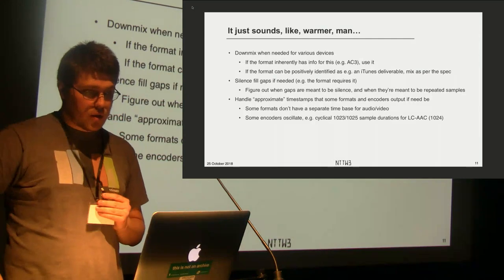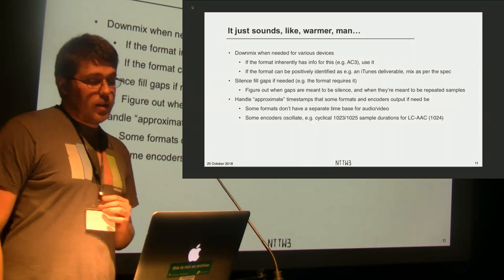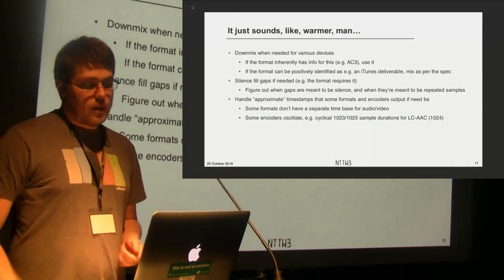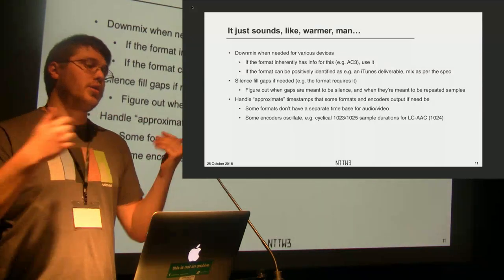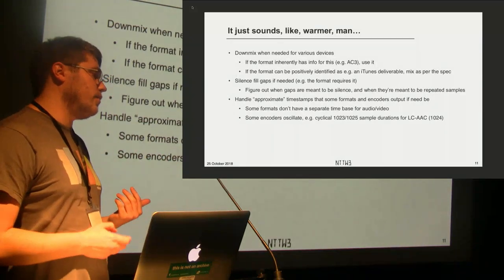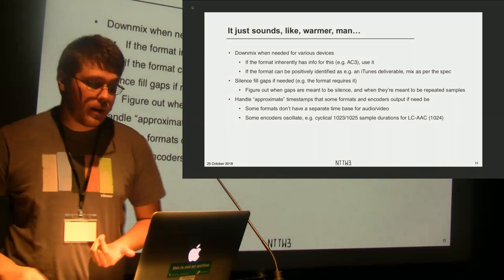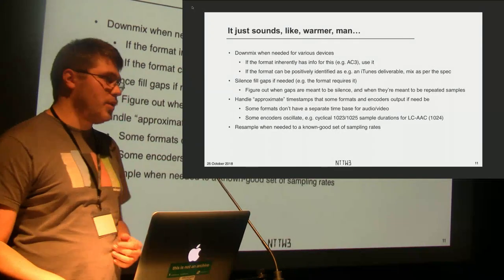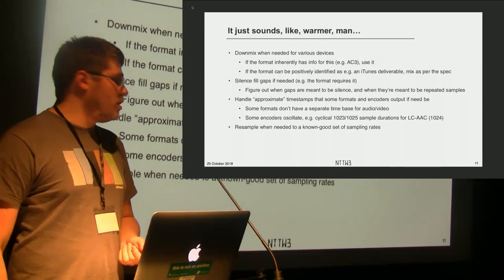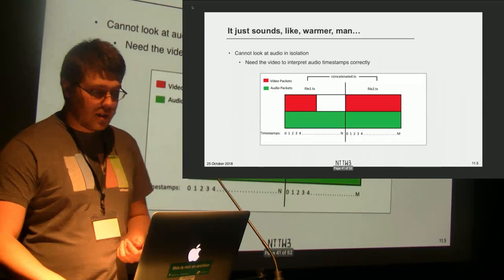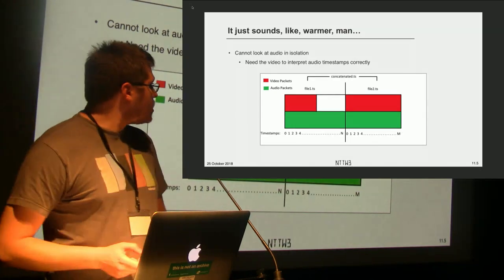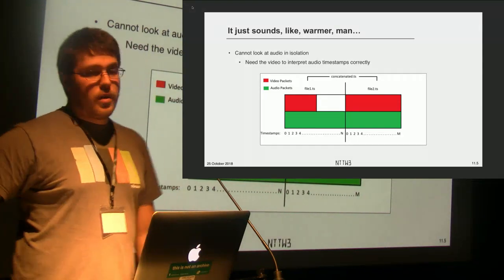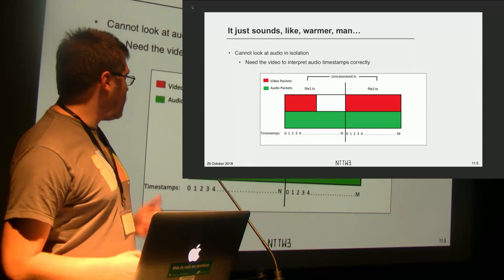If you're trying to be sample-accurate and you have AAC audio showing 1023 samples, then 1025, then 1023, then 1025 — but you know LC-AAC of this variant is supposed to be 1024 samples per frame — you need to adjust and smooth that out. Of course, resample to a reasonable sampling rate. You also cannot handle audio and video timestamps independently — you have to take both streams into account, especially when there are discontinuities.